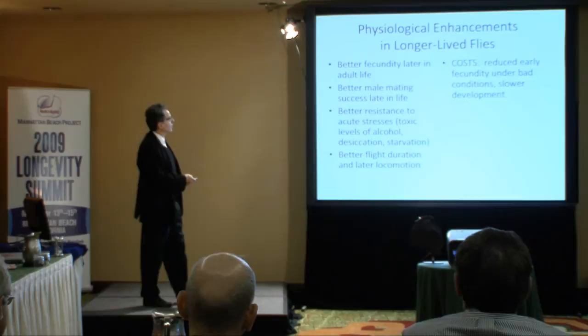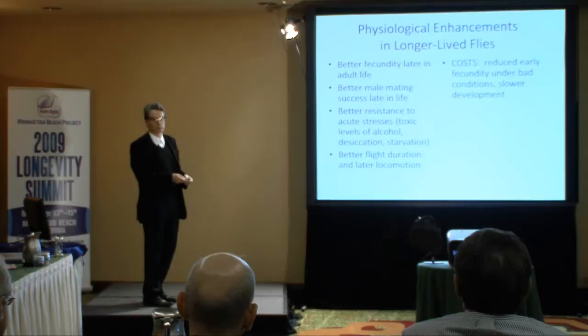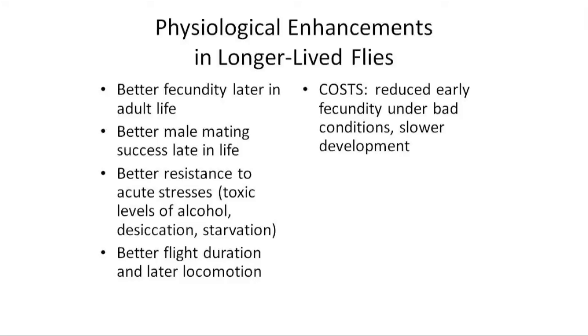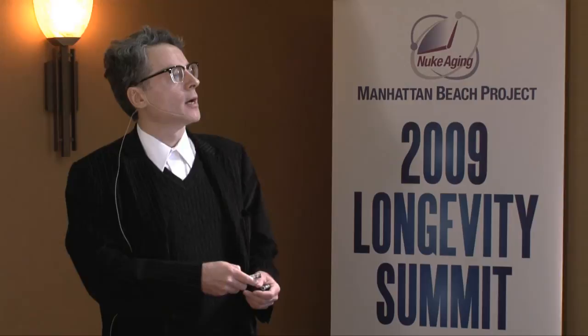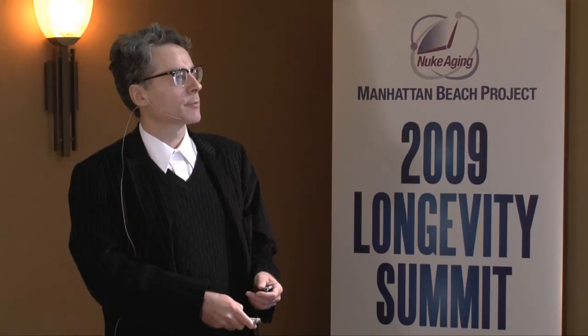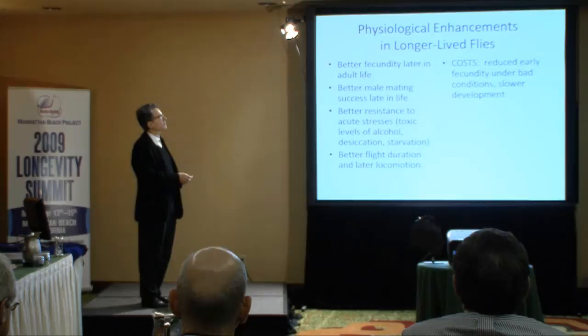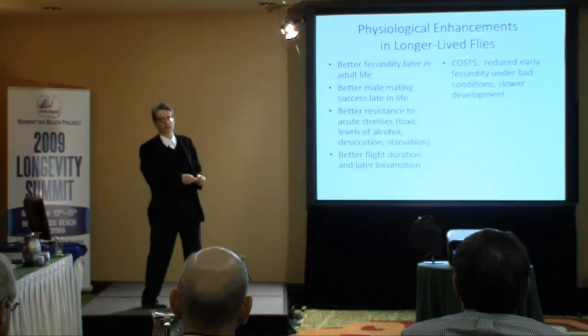Starting in the 80s and continuing through the 90s, we studied a lot of the physiology — the organismal physiology of how this was achieved. One of the dramatic things is that the overall or total amount of reproduction in the course of these much longer-lived lives is much greater. Dramatically better male mating success later in life. Better resistance to all kinds of acute stresses. Much greater athletic performance. There were some reductions: most notably, reduced early fecundity under bad conditions — not under good conditions — and slower rates of development by about a day to a day and a half, which is fairly significant for a fruit fly.